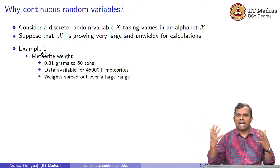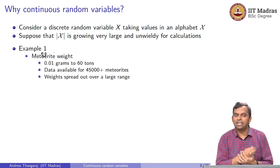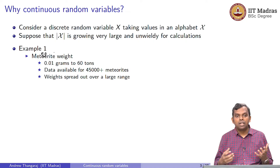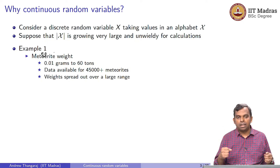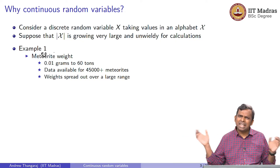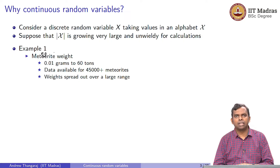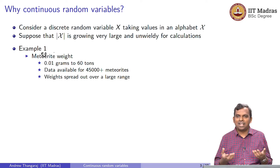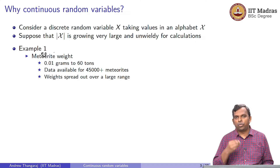Now, if the meteorite hitting the earth is a random phenomenon and you want to do a statistical study, you might want to fit a model and a distribution to it. You notice the data is really vast and the alphabet is very large. If you think of meteorite weight as your random variable, you have 45,000 plus data points over a range of 0.01 grams to 60 tons. With so many different values, did you really gain any insight? Did you understand which weights are more likely and which are less likely? It looks really difficult to make anything meaningful if you stick with discrete random variables.